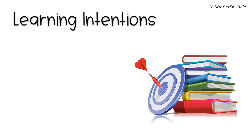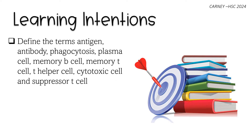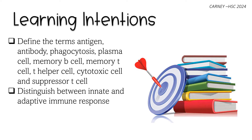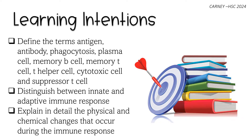Our learning intentions for today's video: we will define the terms antigen, antibody, phagocytosis, plasma cell, memory B cell, memory T cell, T helper cell, cytotoxic cell, and suppressor T cell. We will also distinguish between innate and adaptive immune response, and explain in detail the physical and chemical changes that occur during the immune response.